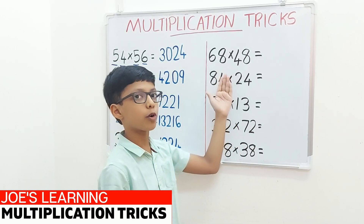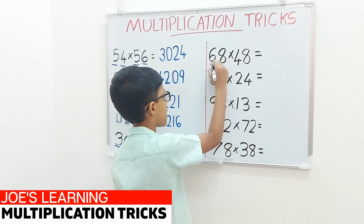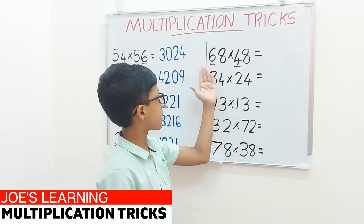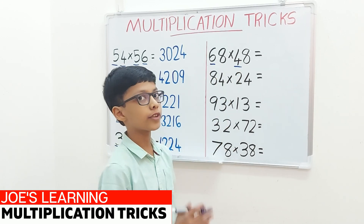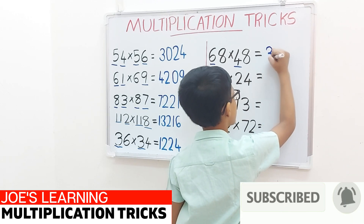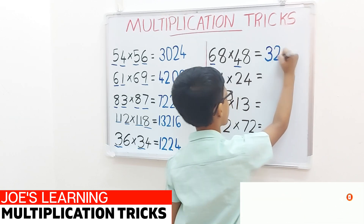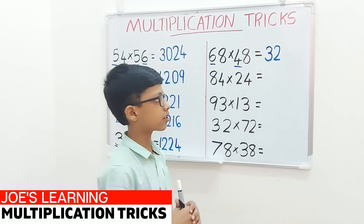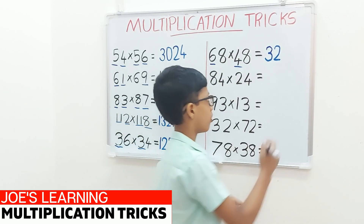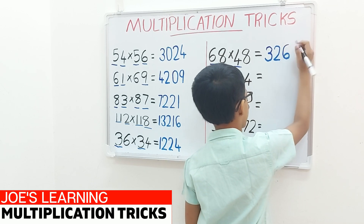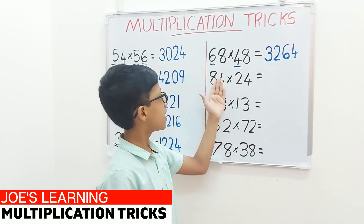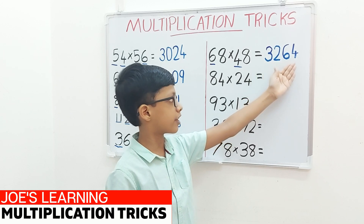The example is 68 multiplied by 48. First we have to multiply the digits in the tens place and add the digit in the ones place. So 6 multiplied by 4 equals 24, and 24 plus 8 equals 32. Write it down as the first two digits of our product. Now to find the next two digits, we should multiply 8 and 8. So 8 multiplied by 8 is 64. Write it down as the next two digits. So 68 multiplied by 48 equals 3264.